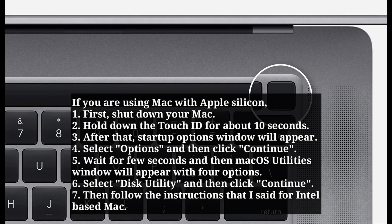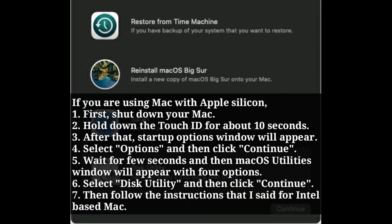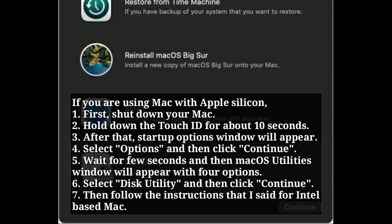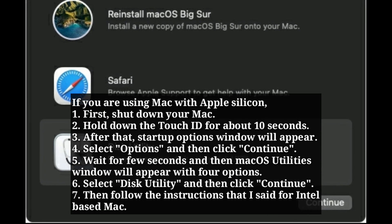After that, restart your Mac via the Apple menu. If you are using a Mac with Apple Silicon, first shut down your Mac via the Apple menu. Then hold down the Touch ID for about 10 seconds until the Startup Options window appears. Select Options and then click Continue. Wait a few seconds and then the macOS Utilities window will appear. Select Disk Utility and click Continue, then follow the same instructions as for Intel-based Mac.